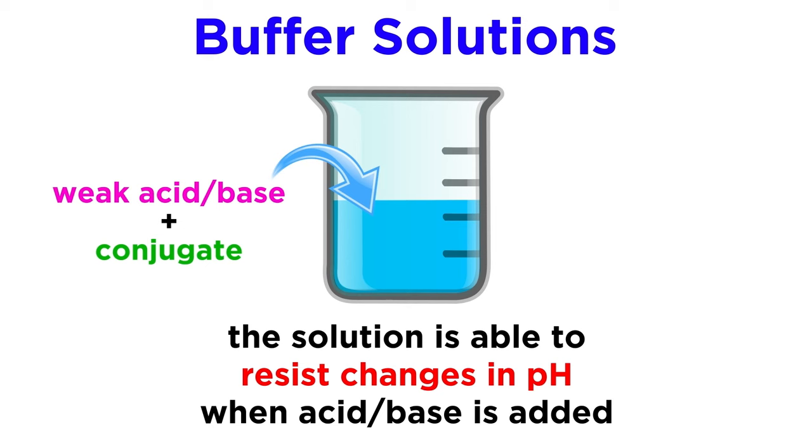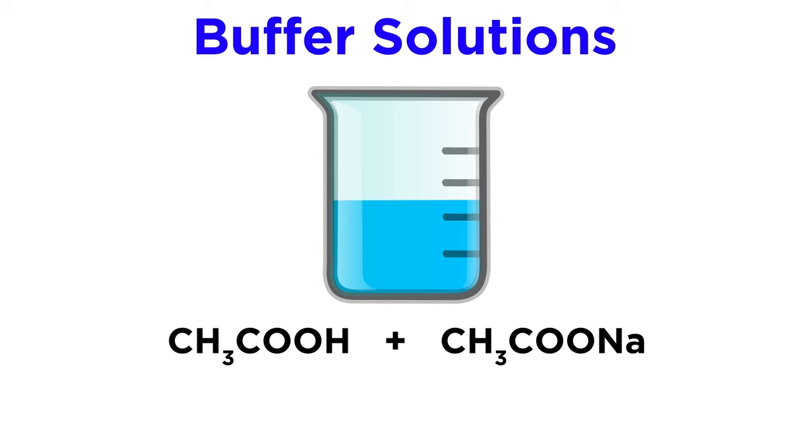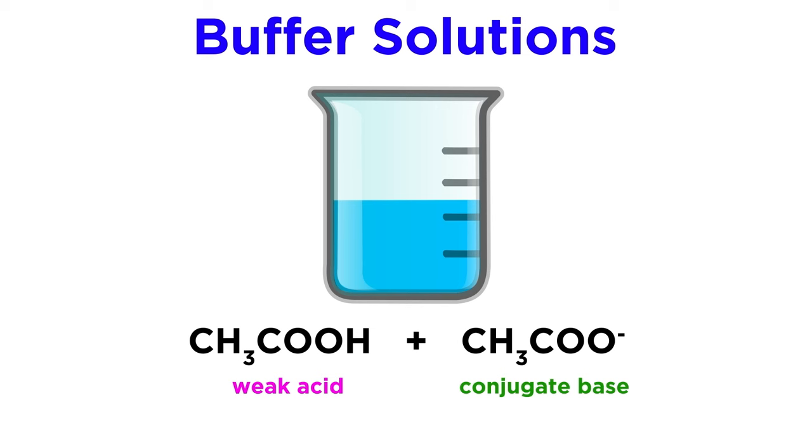An example of a buffer solution would be one containing acetic acid and sodium acetate, which provides the acetate ion. This comprises a conjugate acid-base pair for acetic acid, which is a weak acid.